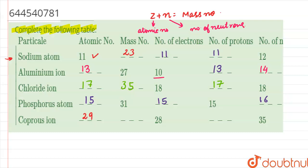For the cuprous ion, the atomic number of copper is 29 and the number of electrons is 28. The number of protons equals the atomic number, which is 29. The number of neutrons is given as 35, so the mass number is 29 plus 35, which equals 64. The table has now been completely filled.